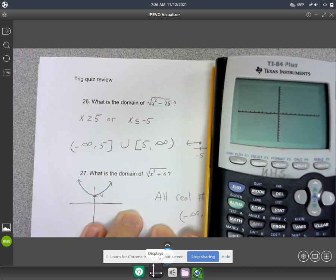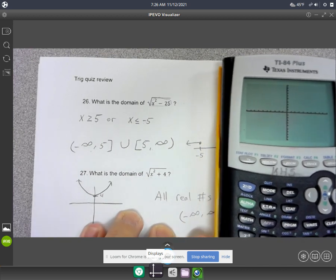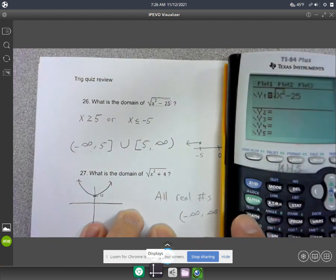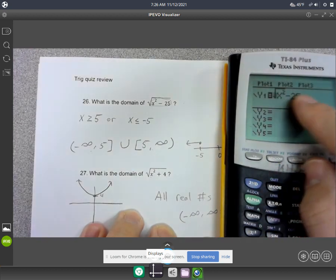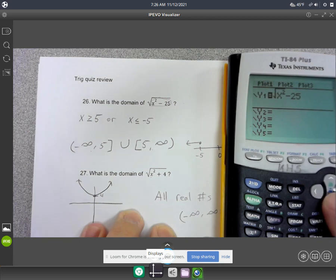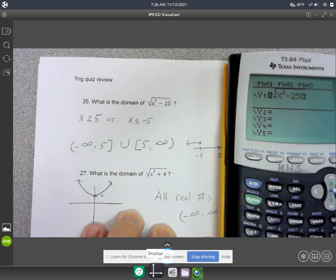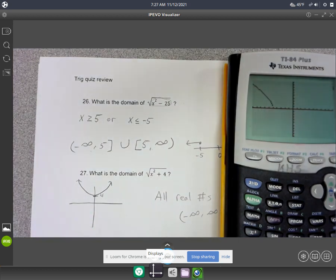All right. Nothing's happening. Huh, I wonder why nothing is happening. Oh, it's because my square root's not over the 25 like it should be. Square root of x squared minus 25. There we go.